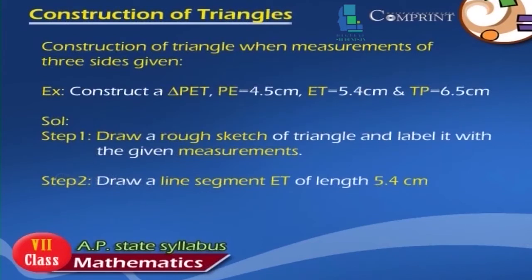Construction of triangle when measurements of three sides are given. Example: Construct a triangle PET where PE is equal to 4.5 cm, ET is equal to 5.4 cm, and TP is equal to 6.5 cm. Solution.